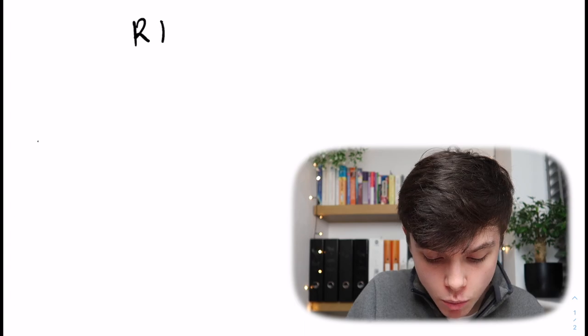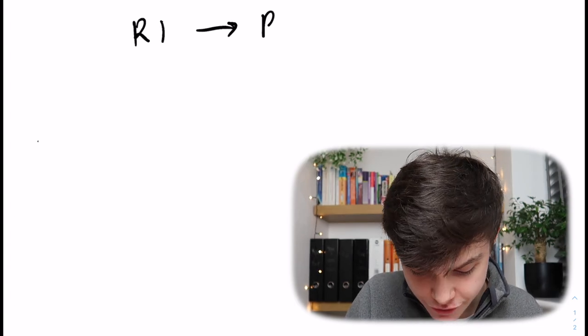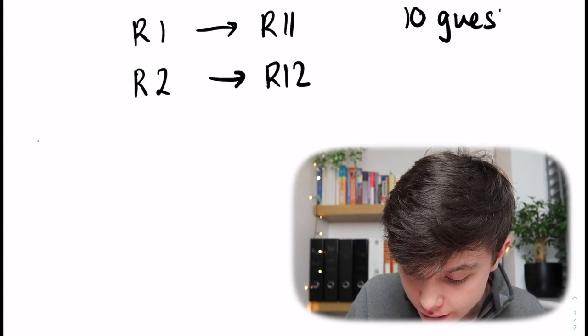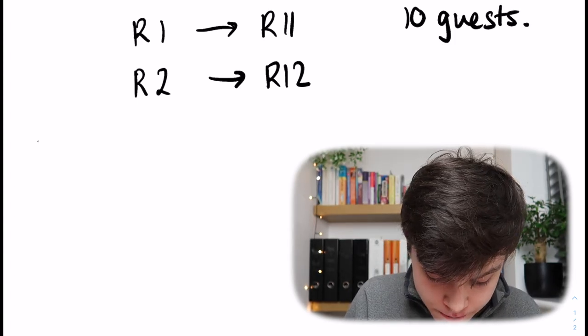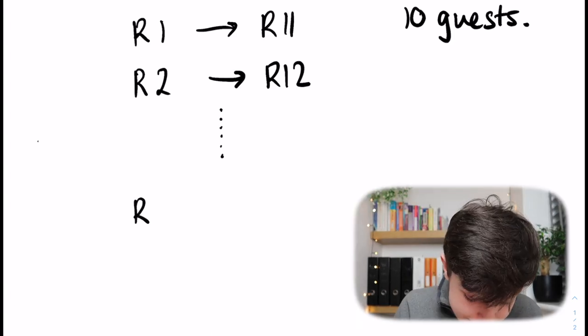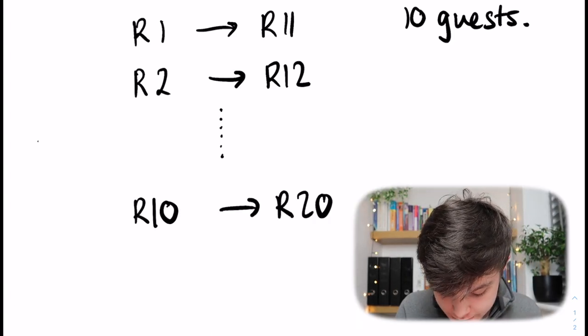But that was the case when we just had one person arriving. What if we had 10 people arriving at Hilbert's Hotel? Then what we would have to do is not move everybody up by one room but move them up by 10 rooms. Room one will go to room 11, room two will go to room 12 — because we've got 10 new guests, we add 10 each time — so room 10 will go to room 20.